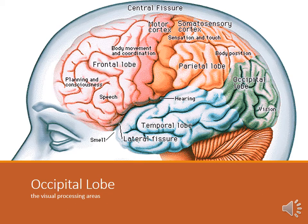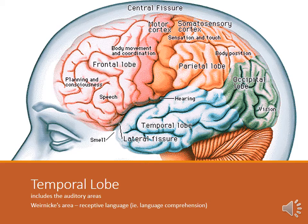The occipital lobe: occipital, optics, vision. It takes up about a third of our overall brain activity — vision is our dominant sense. Your temporal lobe is right off to the sides near your temples, and it helps you hear a tempo. Your temporal lobe helps you with hearing and processing sound. In your temporal lobe, you also have Wernicke's area — your area for language comprehension, your ability to understand language.